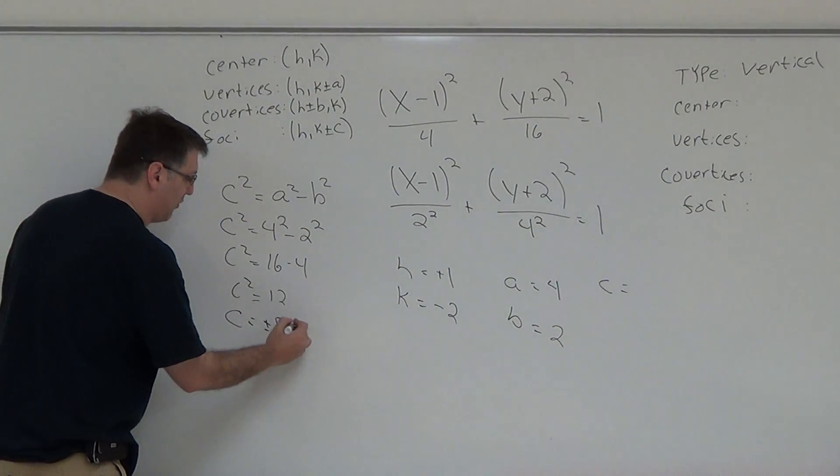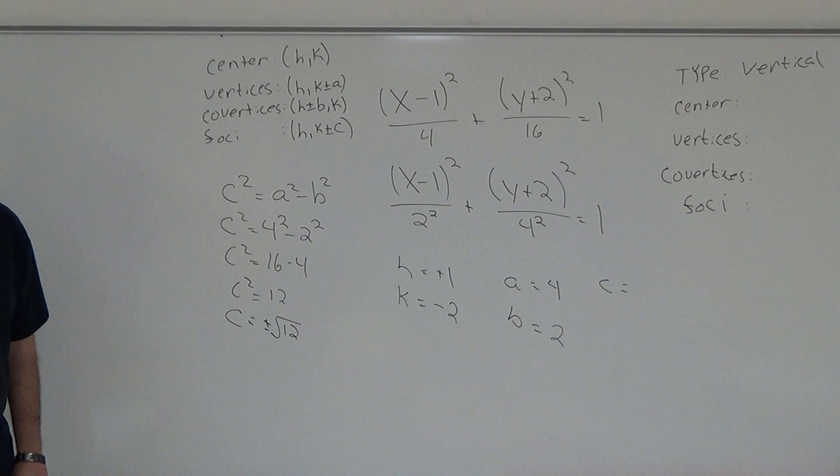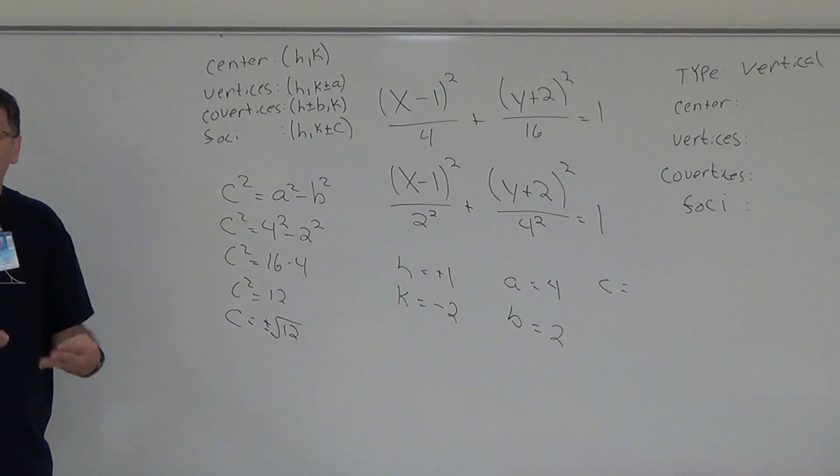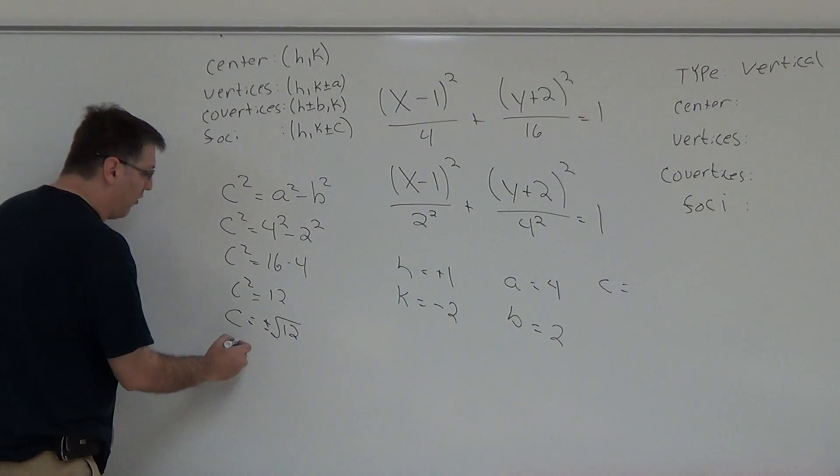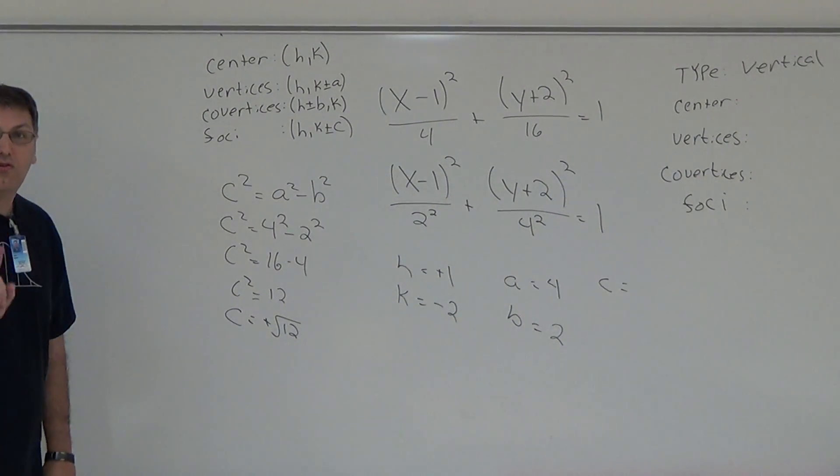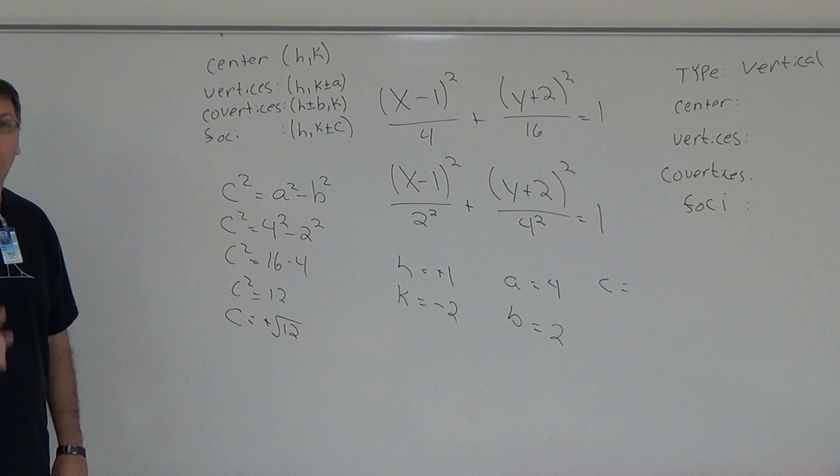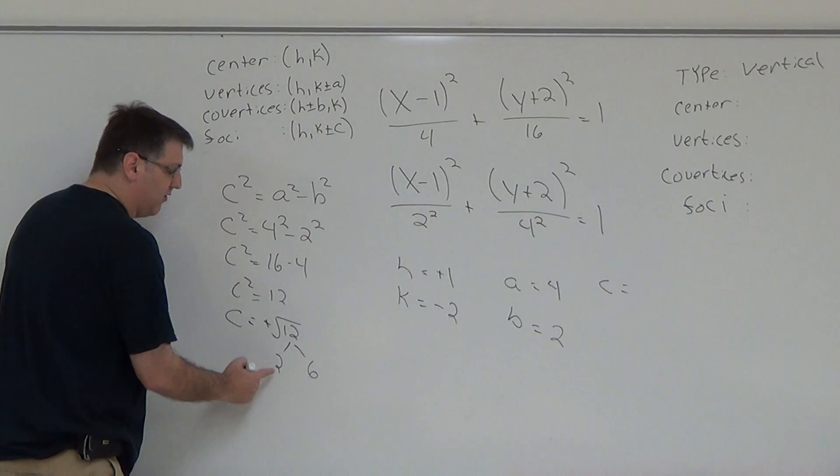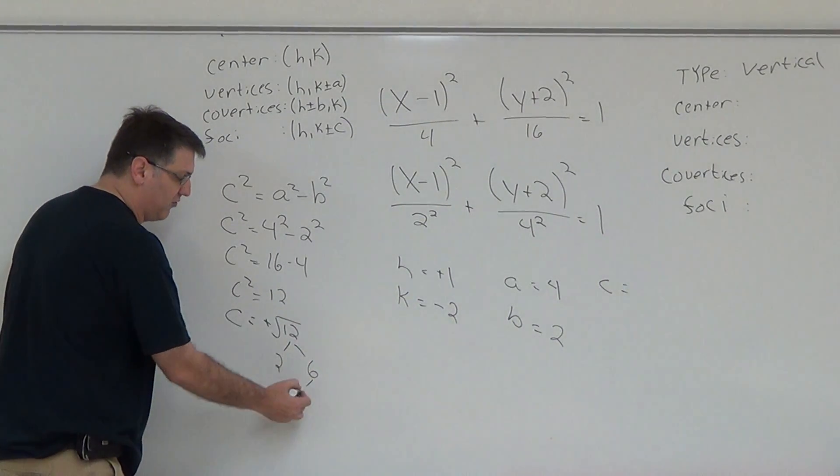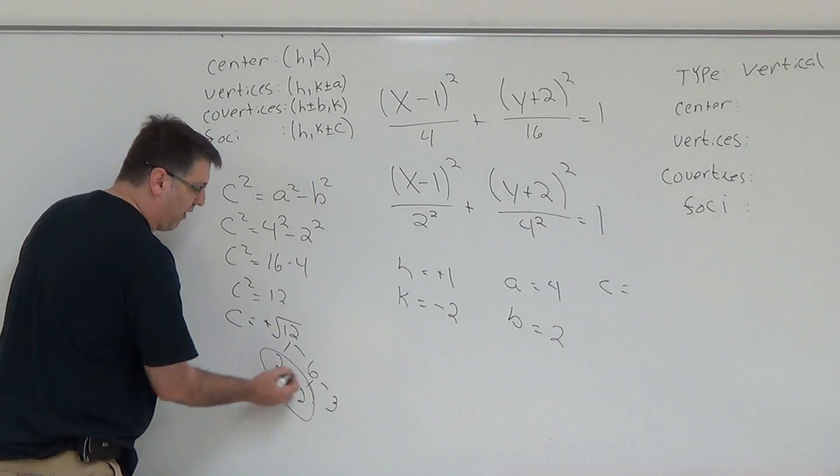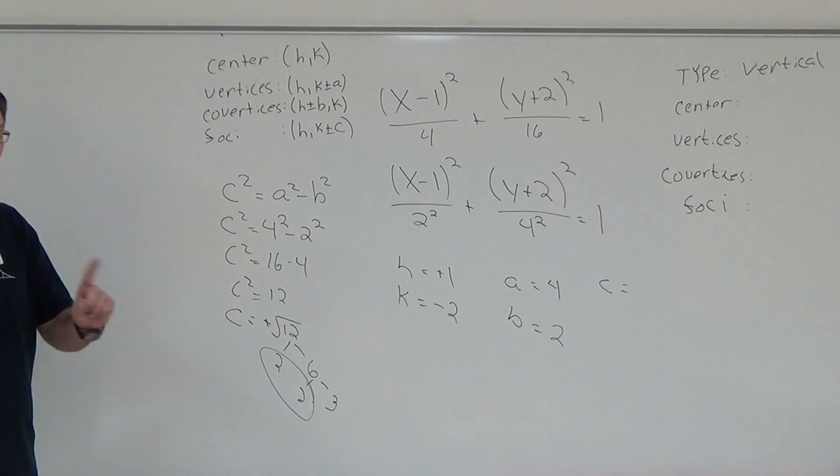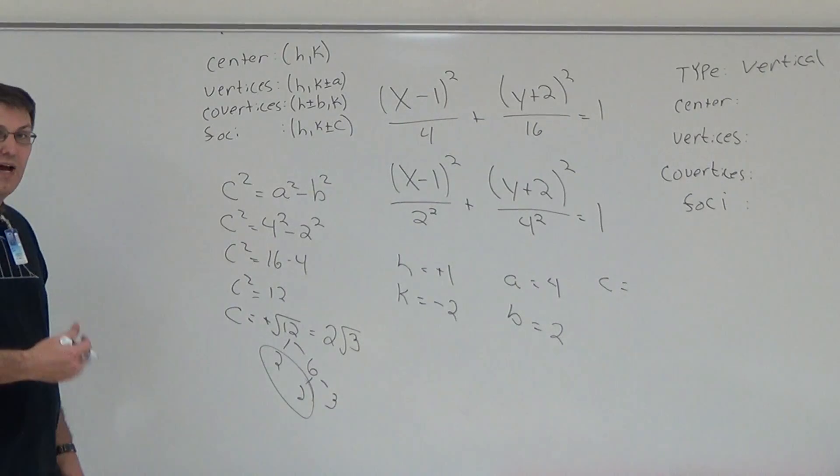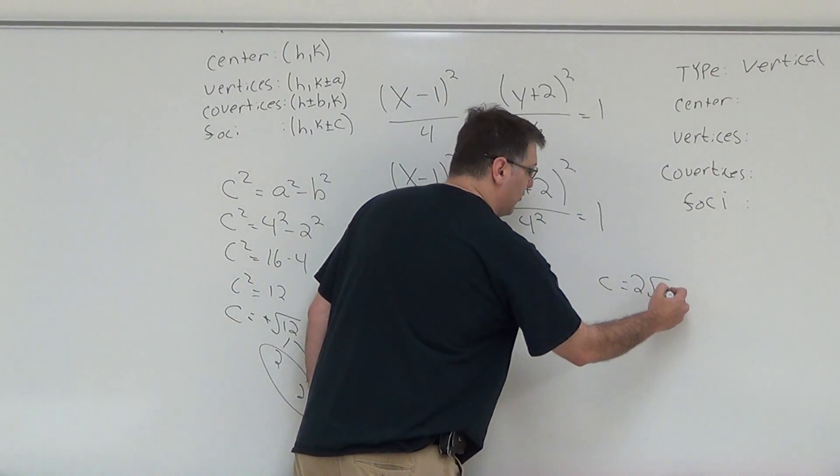C becomes plus or minus the square root of 12. But C is a distance. If you remember back to the first video, C is your distance from your center to your focus. Therefore, you cannot have a negative distance, so your C is only positive square root of 12. Do not leave it as square root of 12. You must break it down. We can do that factor tree: 2 times 6, 2 times 3. We look for our couples. We have a couple of 2's, one of them comes on the outside, therefore my C is 2. Whatever is left is underneath the square root, 2 square root of 3. So that is my C, 2 square root of 3.